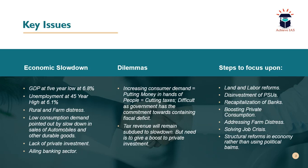Tax revenues are also decreasing because of the slowdown — private investment is not taking place, new plants are not coming up, profits are decreasing, and so tax revenue available to the government is declining. The government needs to boost private investment, which will only occur once the government makes complementary investments, but the government is not doing that, and thus private investment is not picking up either. The government is in a complete dilemma.